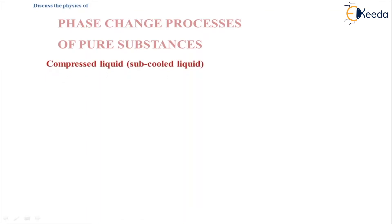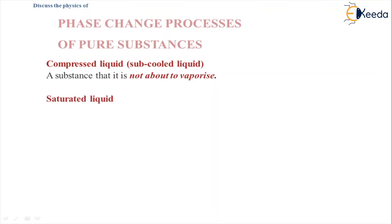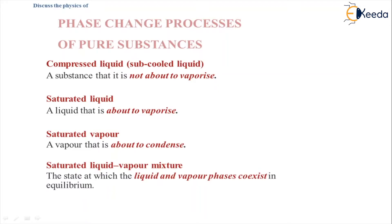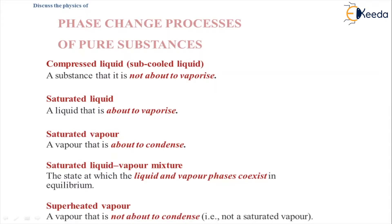Now let us look at the various stages of the phase change process of a pure substance. The first is the compressed liquid, also called sub-cooled liquid — a substance not about to vaporize. Next is the saturated liquid — a liquid that is about to vaporize. Then comes saturated vapor — a vapor that is about to condense. The saturated liquid-vapor mixture is the state where liquid and vapor coexist in equilibrium. Finally, superheated vapor is vapor that is not about to condense.